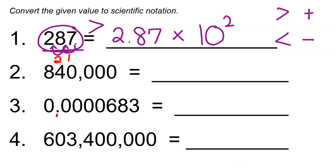Moving on to number 2: we have 840,000. That is not between 1 and 10, so we need to move our decimal point several times. Notice that the comma in the number is not the same thing as a decimal point — we don't start moving from there. There is no decimal point shown, so we place it at the very end and start moving from there. Don't confuse a comma with a decimal point — they are two different things.